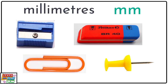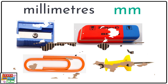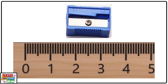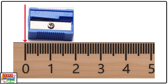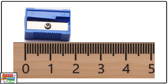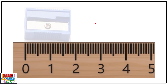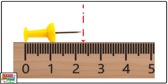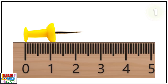Let's try and measure the sharpener and push pin in millimeters using the ruler. Remember, when measuring the length of an object, we must first line up the starting point with the number zero. As you can see, the length of the sharpener is 18 millimeters. Now you try — how long is the push pin in millimeters? It's 23 millimeters long.